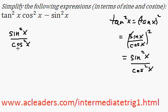Okay, back to here. So that's tan squared x right here. And we multiply by cosine squared x and minus sine squared x.